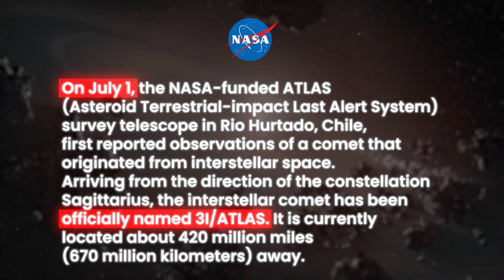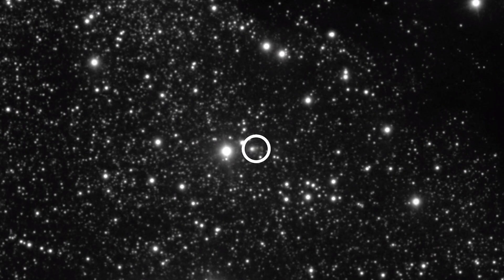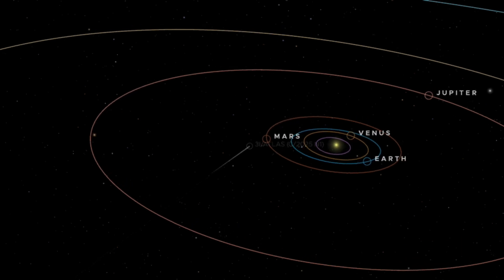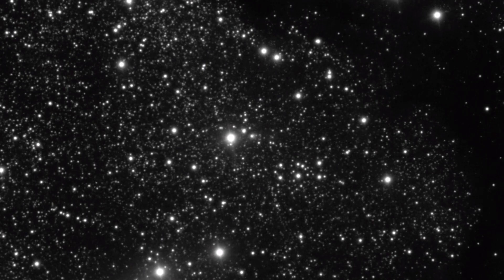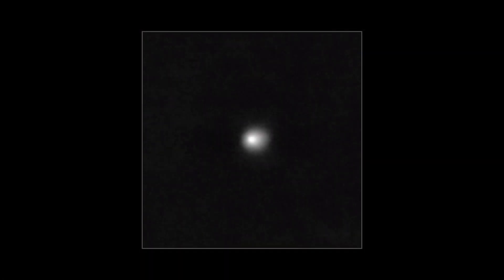On July 1st, 2025, a telescope in Chile spotted a faint object moving through our solar system. It was soon confirmed to be 3I Atlas, the third interstellar comet ever discovered.